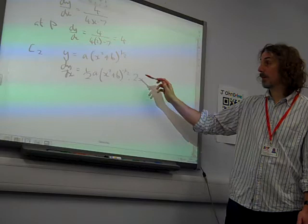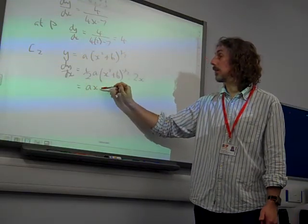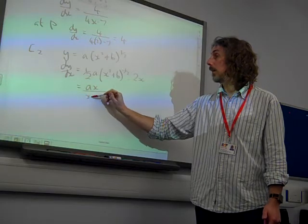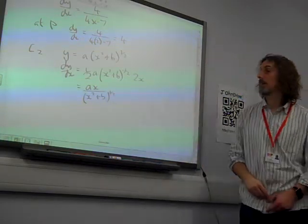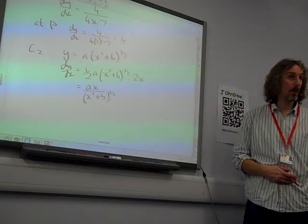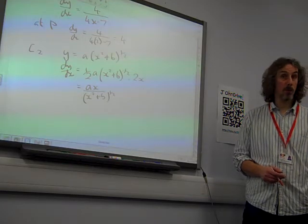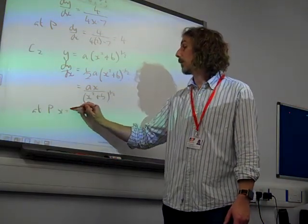Let's simplify that. We've got 2x times a half times a. So that's ax over (x squared plus b) to the half. And we're interested in what happens when x equals 2. So the gradient at P, at P, x equals 2.